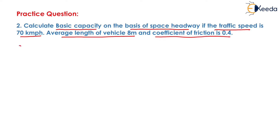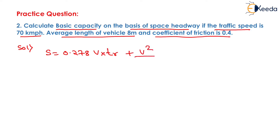For the determination of basic capacity, we need to determine the value of S, which will be equal to 0.278V × TR plus V² upon 254F, plus the length of vehicle L.